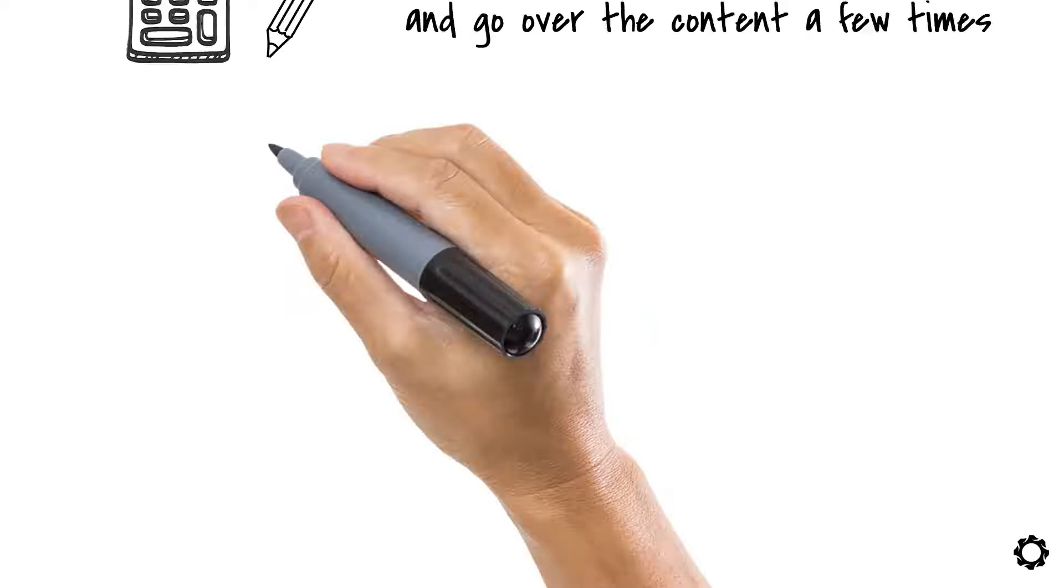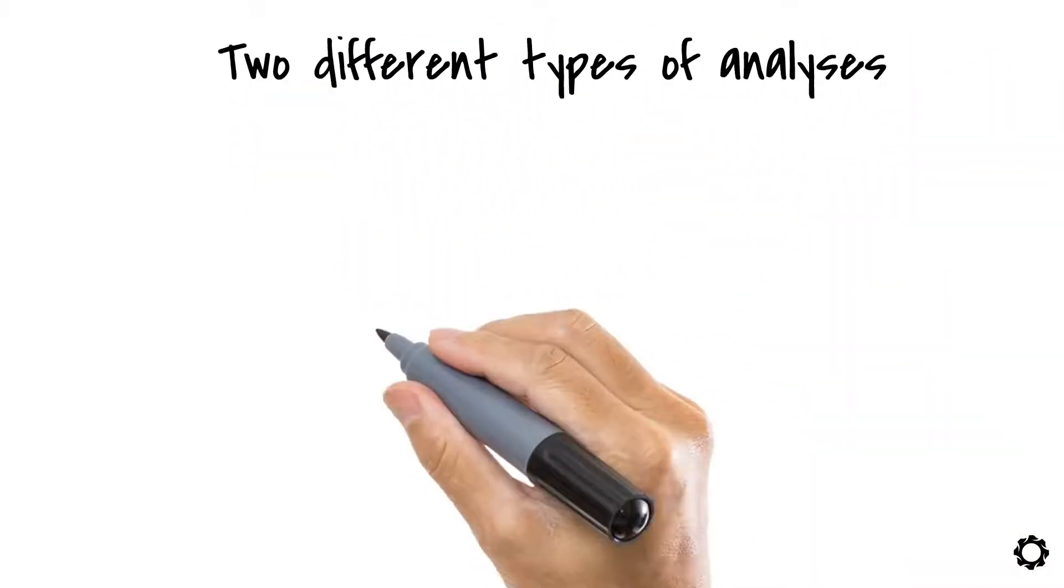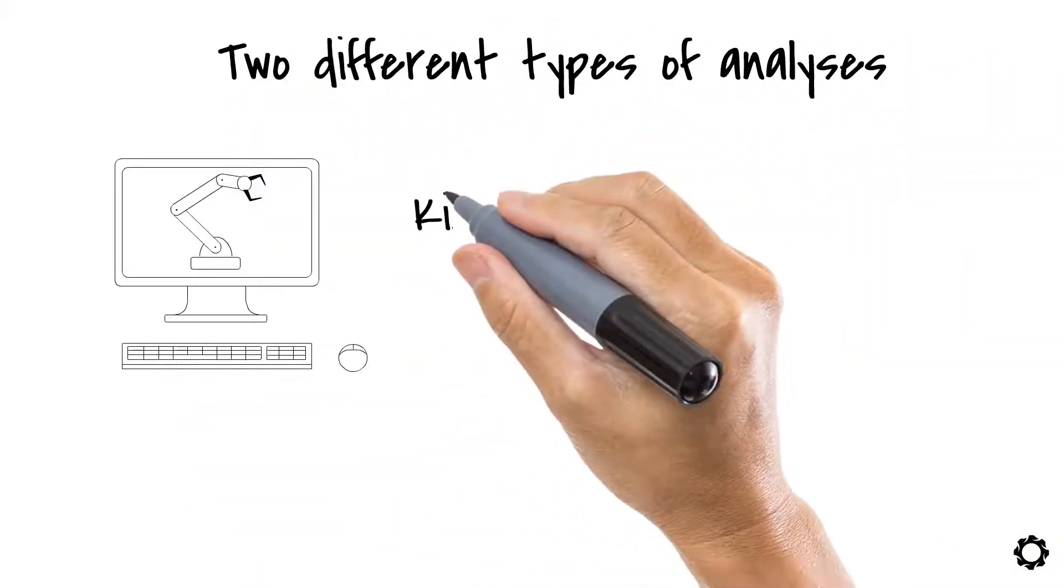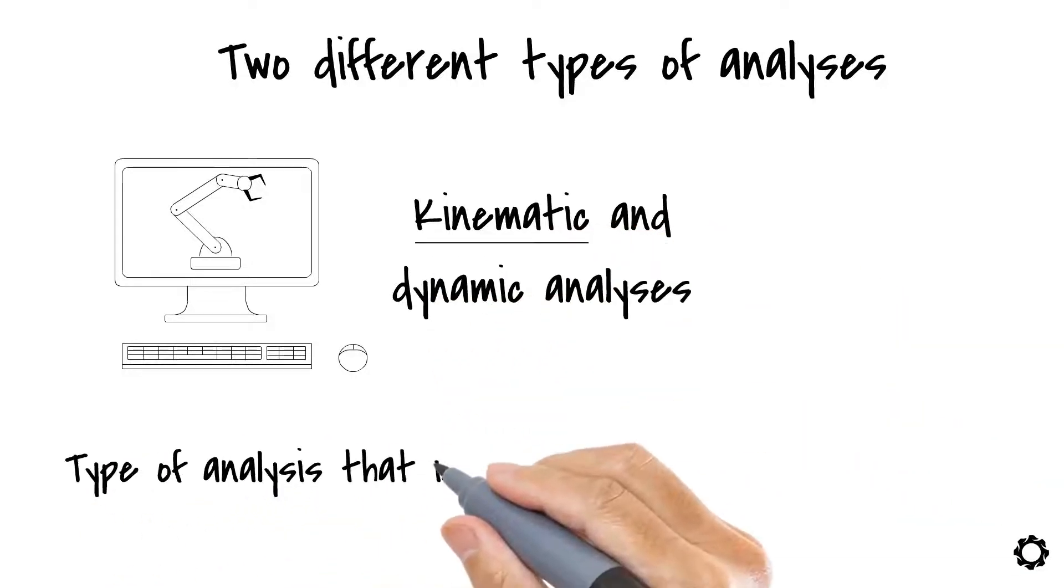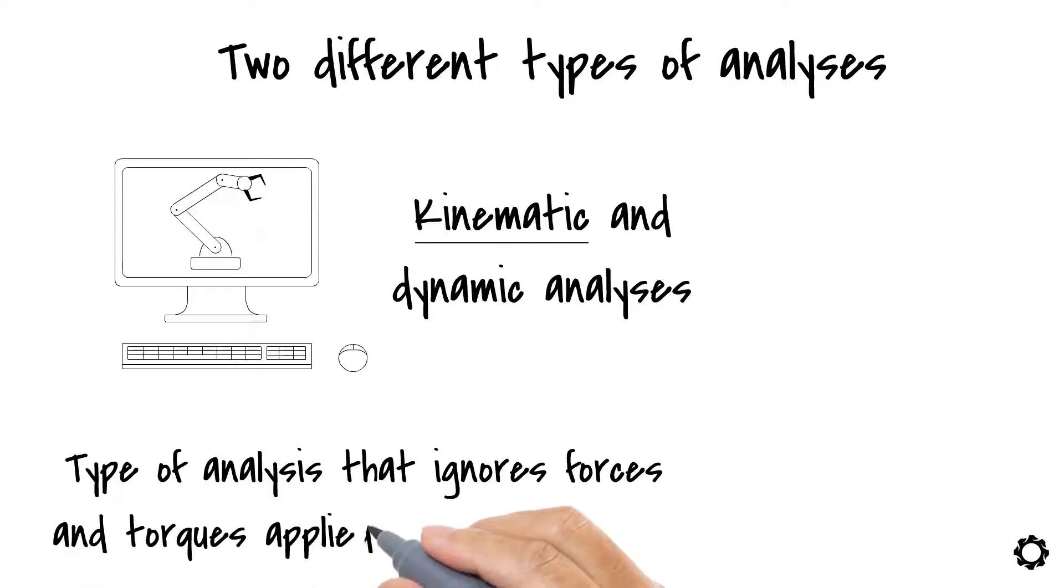In our course, we talk about two different types of analysis and simulations. We spoke about the kinematic and dynamic analysis. You can say that a kinematic analysis is the type of analysis that ignores forces and torques applied to our mechanism.